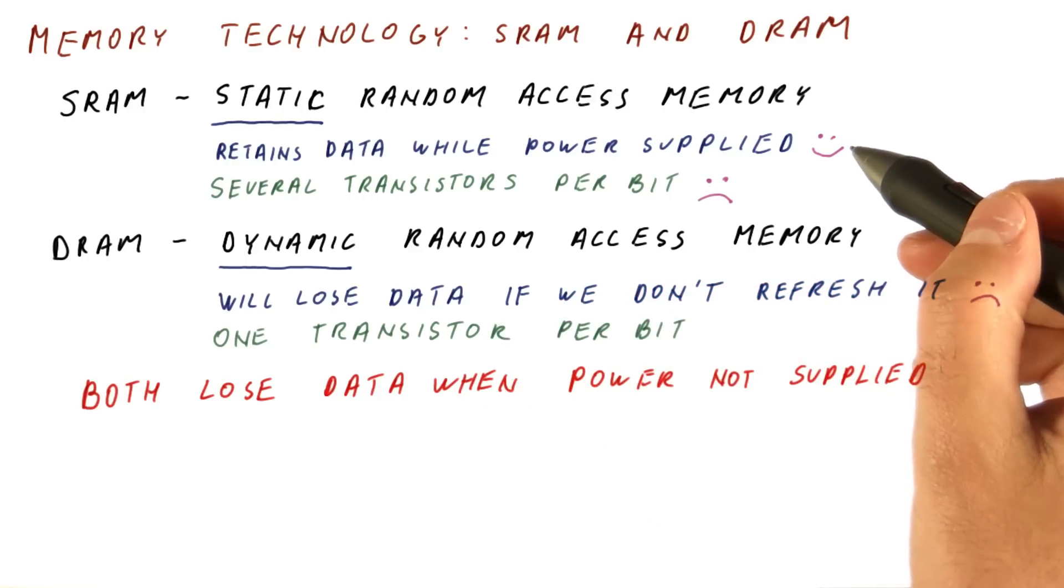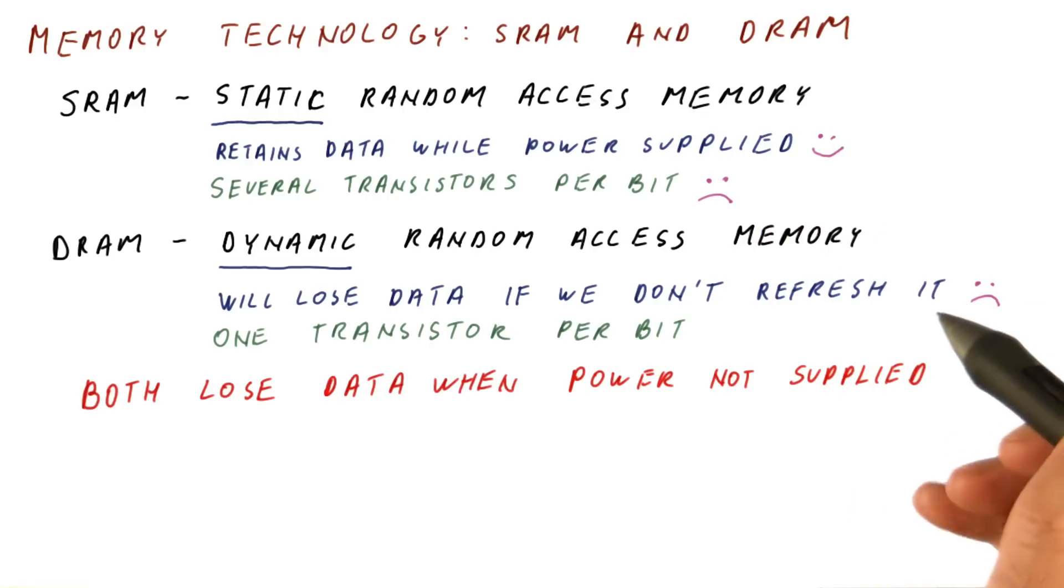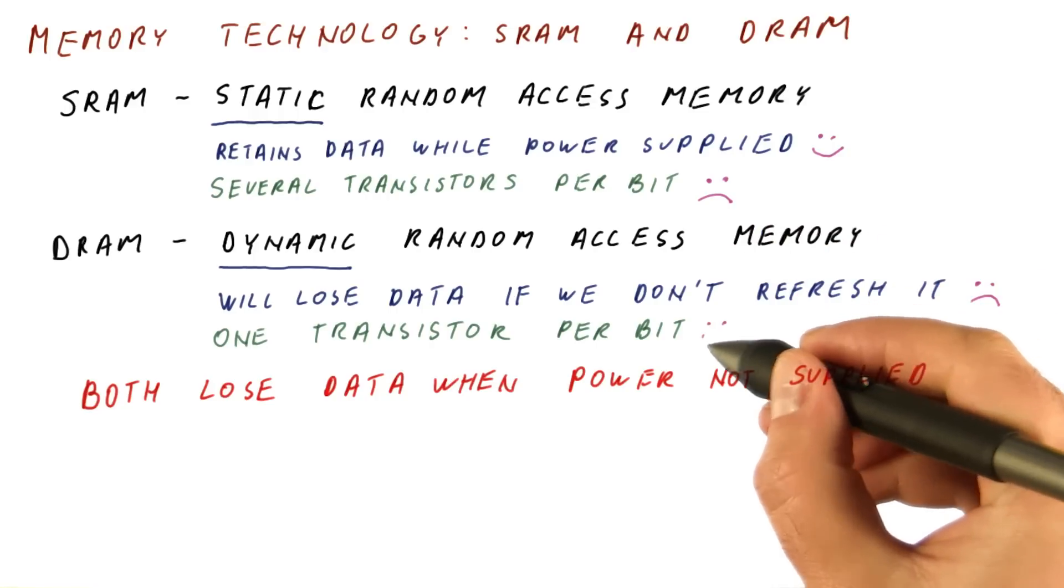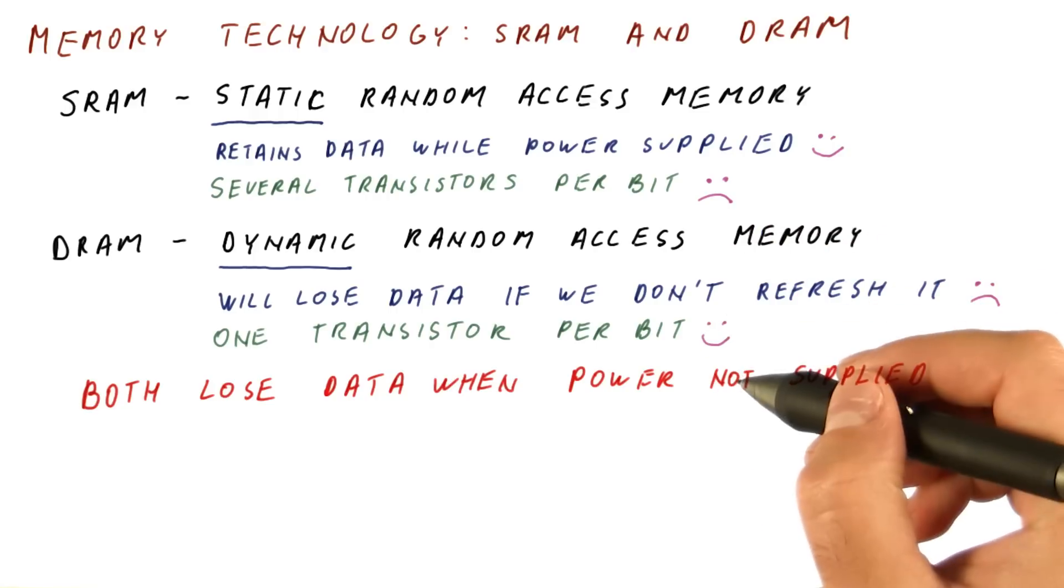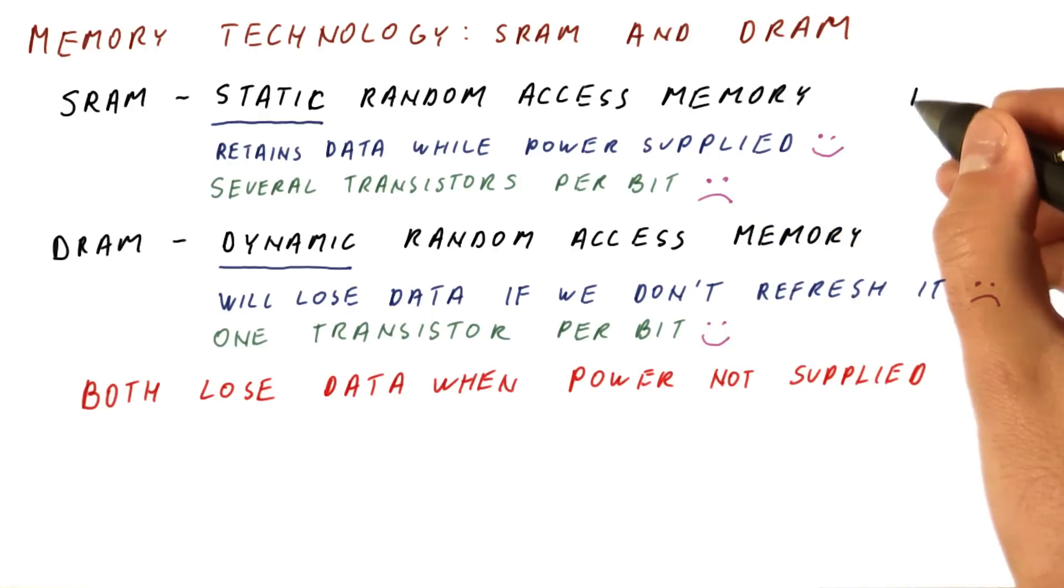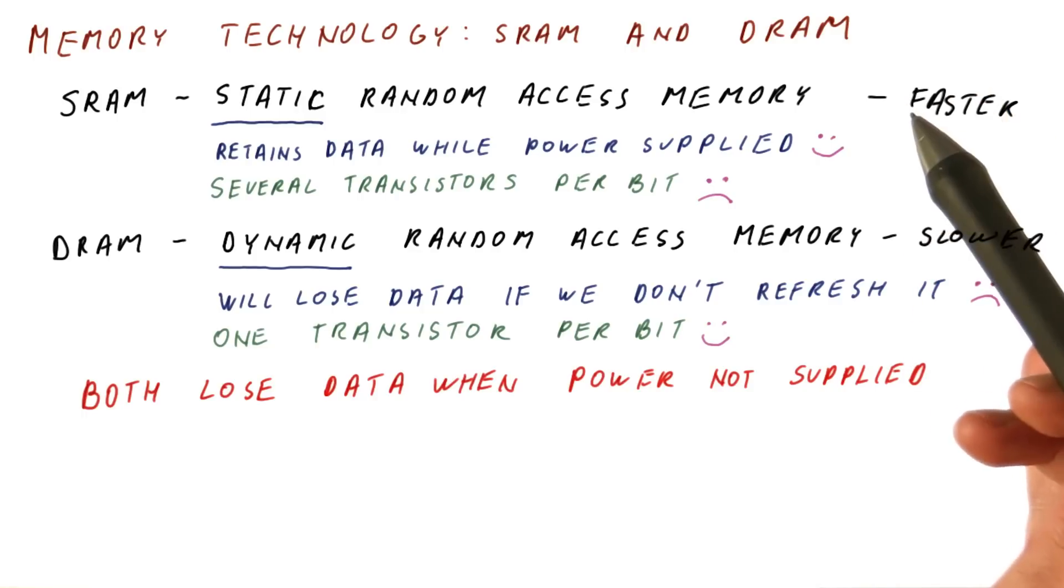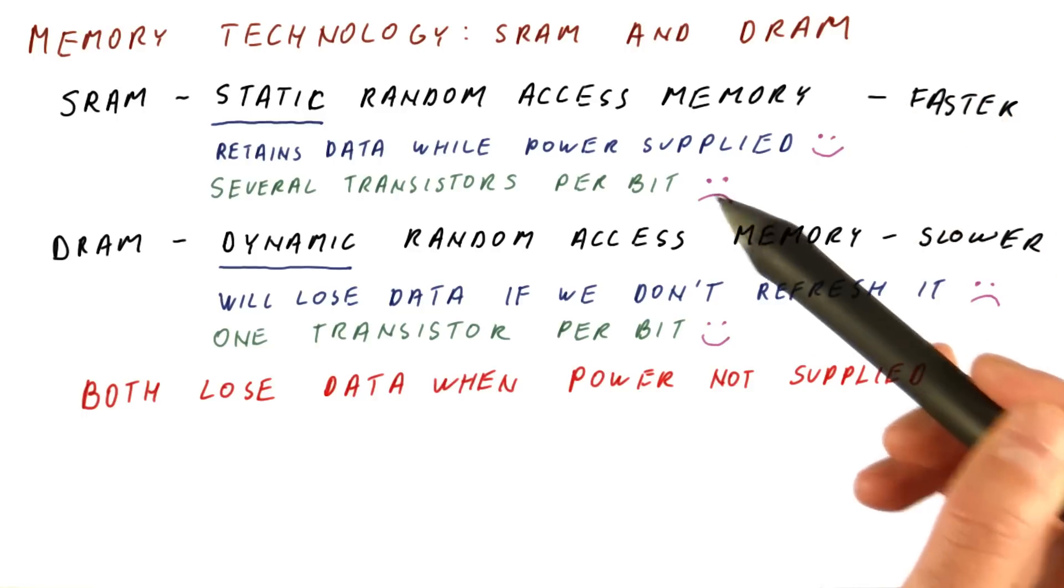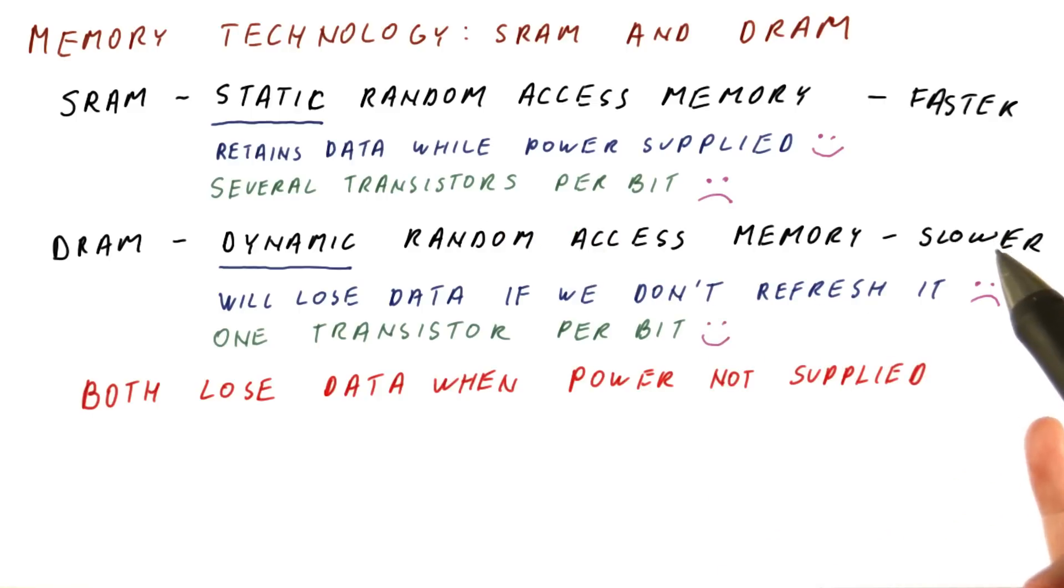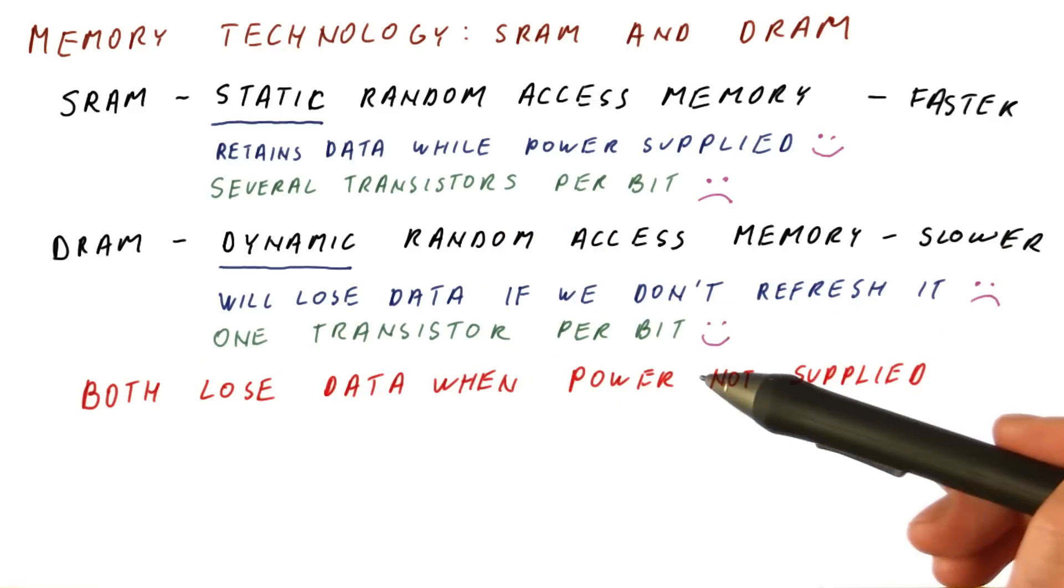SRAM is good because it retains data, but bad because it's more expensive. With DRAM, we have to refresh the data to keep it alive, but we can cram a lot of these bits on a chip. There's another difference: SRAM is typically faster, and DRAM is typically slower. So we get speed and simplicity at more cost, or we can go slower and need to work at it, but have more bits.